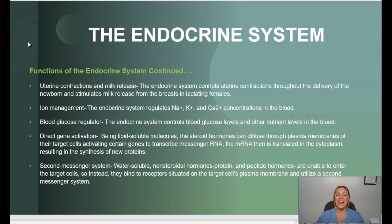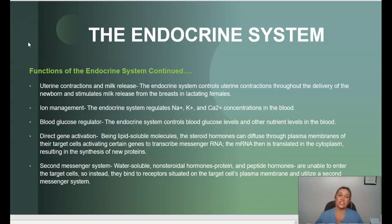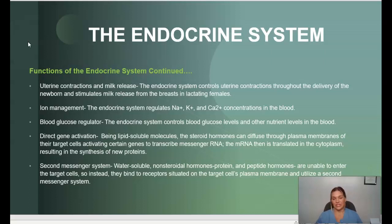Continuing on with functions of the endocrine system — uterine contractions and milk release: the endocrine system helps throughout the delivery of a newborn and stimulates milk release in females that are breastfeeding. It also helps to regulate sodium and potassium concentrations in the blood, and controls blood glucose levels and other nutrient levels in the body. It is also responsible for direct gene activation as well as functioning as a second messenger system.